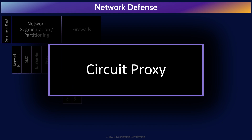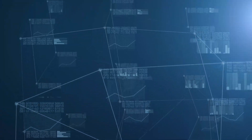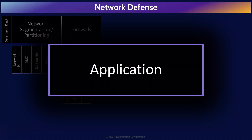Circuit proxy firewalls operate at layer five, the session layer. Circuit proxies therefore understand what is happening at the session layer and will allow a circuit — a session — to be established if it complies with predefined rules. And all the way at the top of the OSI model we have application firewalls, which operate at layer seven, the application layer. Application firewalls can do deep packet inspection — they can inspect anything in the packet header and reassemble a series of packets to inspect the actual data contents, such as scanning a file for viruses. They are very intelligent and can make sophisticated decisions, but come at the cost of speed — they are the slowest type and cause the highest latency. Most modern firewalls offer capabilities of all these types, giving you the benefits of both speed and intelligence where you want it.